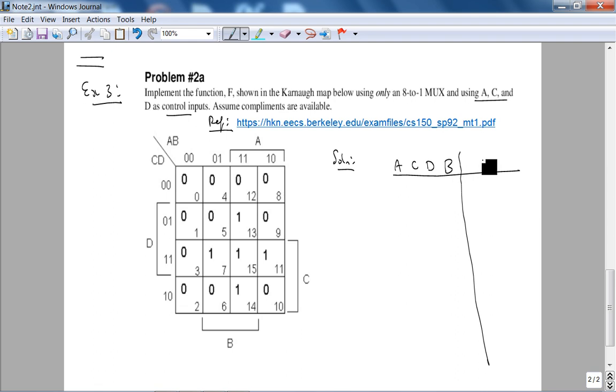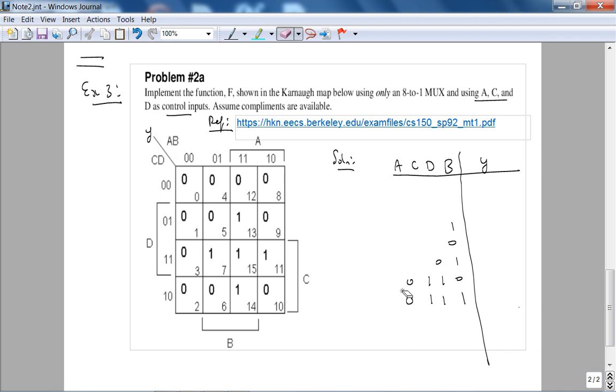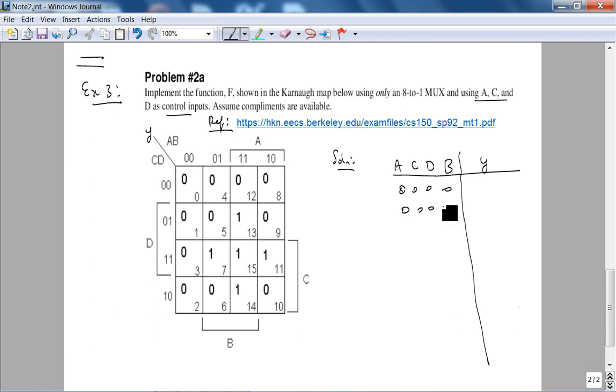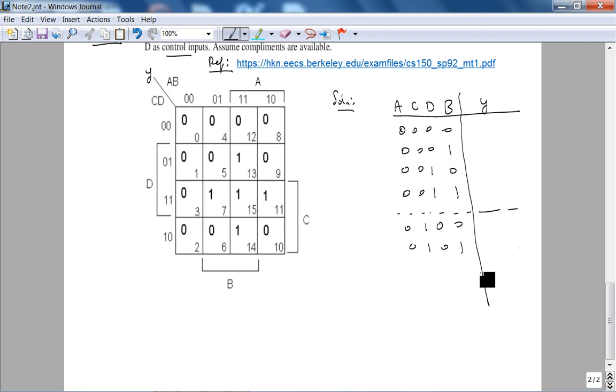What I want is basically the first three of the most significant columns to be ACD, and then I want to get B, and then let's look at my output y. The mistake I made was I was looking at the Karnaugh map as I was doing the truth table. Let's not do that. Let me just write out the 16 possible numbers.